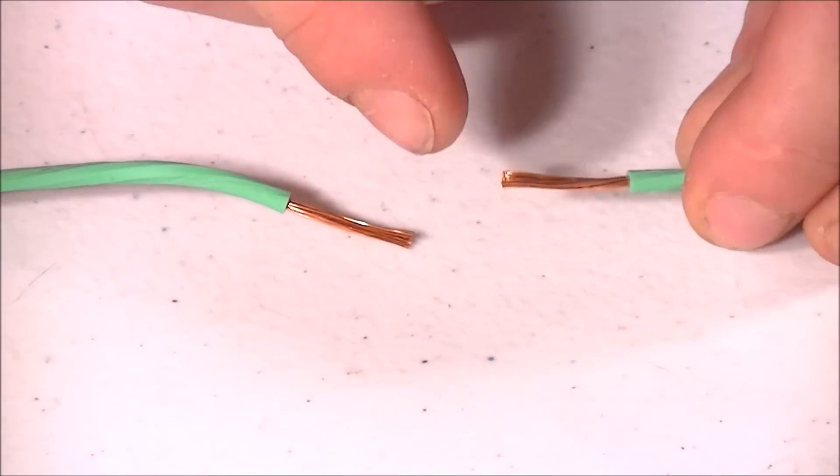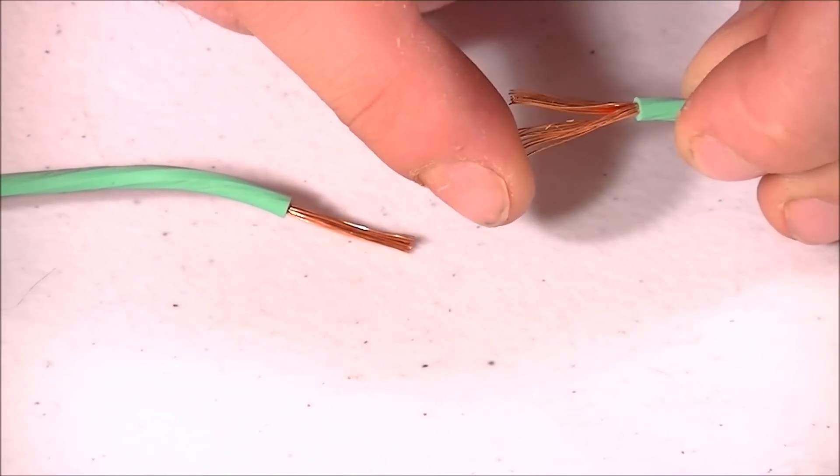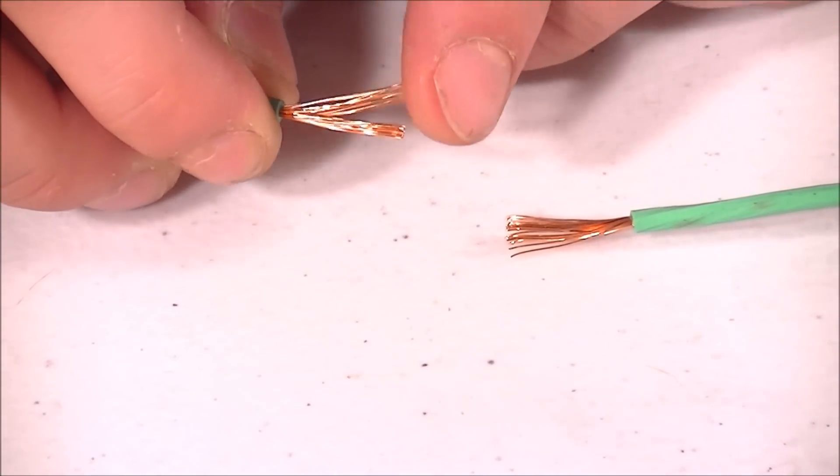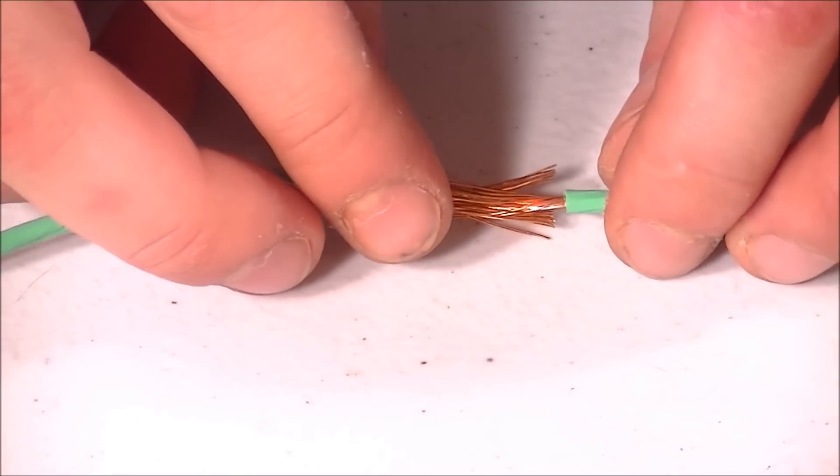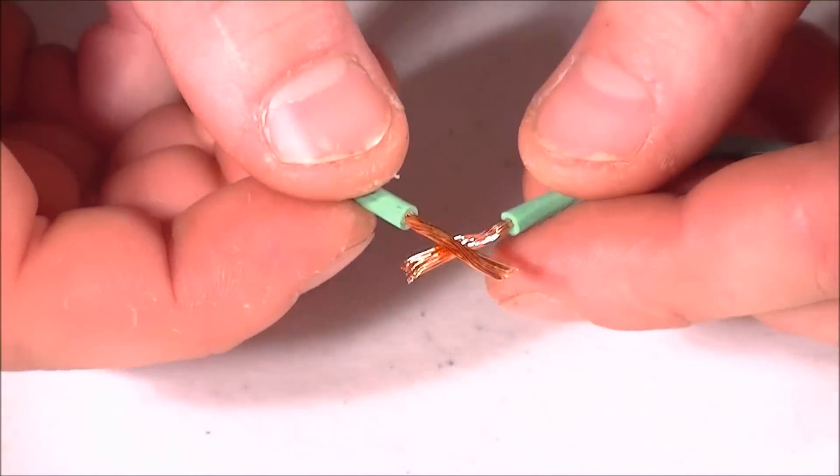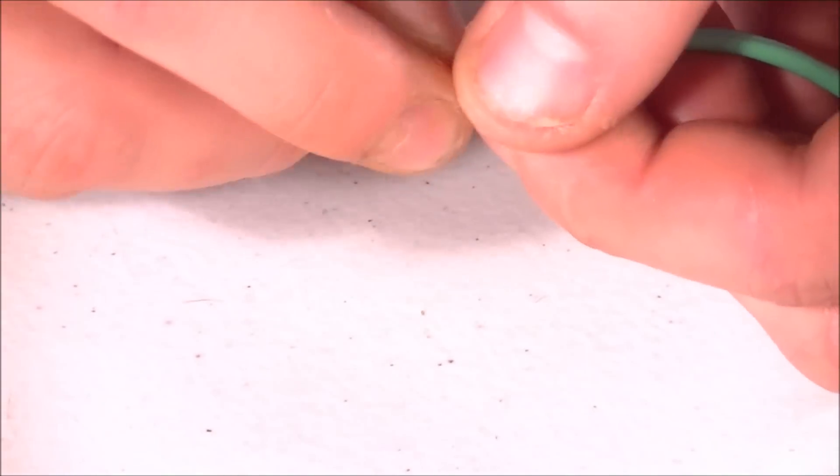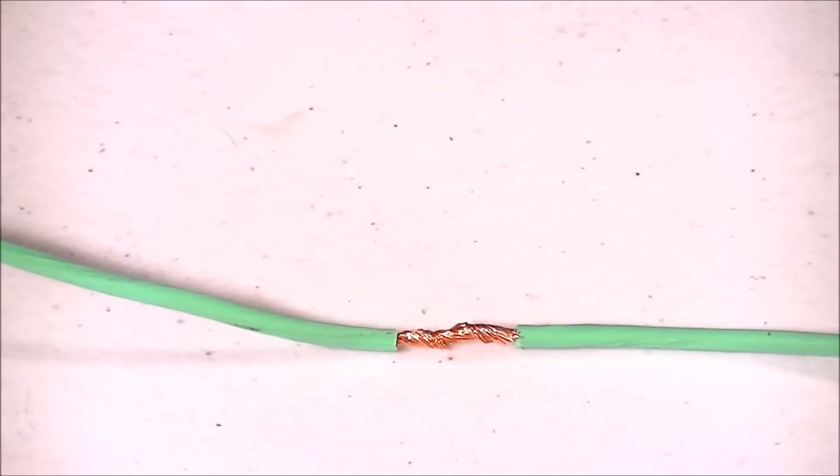Again there are many methods to do this but for the next step I separate the wire strands and mesh them together. I found this to be the most reliable method even when joining wires of different diameters. Some people use an X pattern and just twist the wires together. It's just more of a preference I guess.